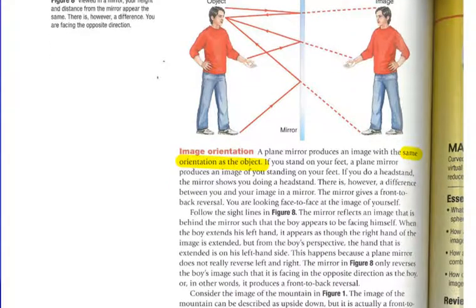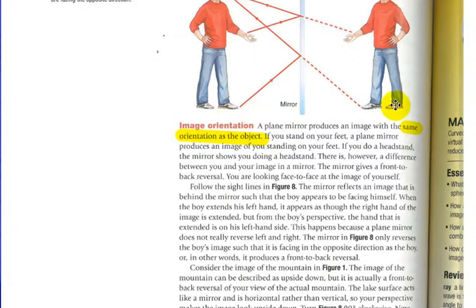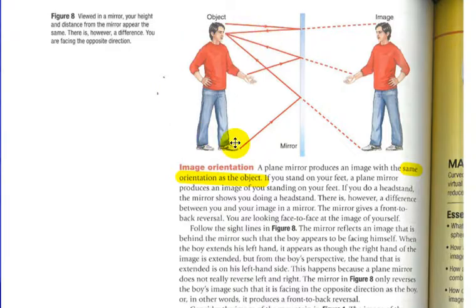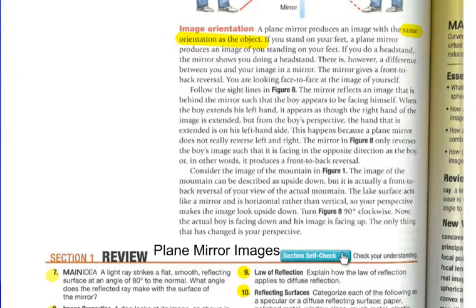Image orientation. It has the same orientation as the object, so if the object is right side up, the image is right side up. If the object is upside down, the image is upside down.